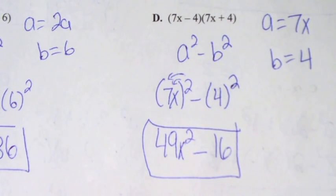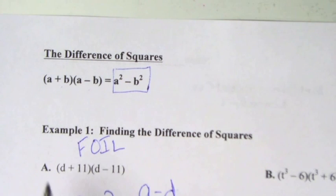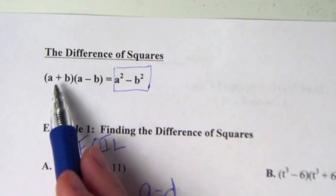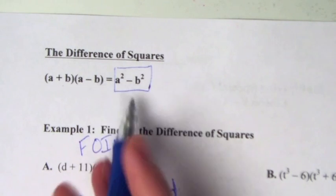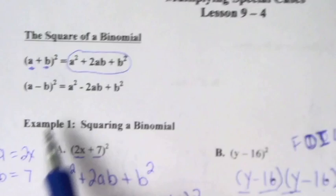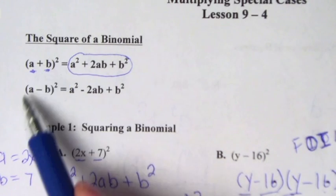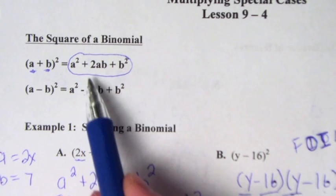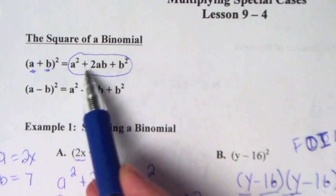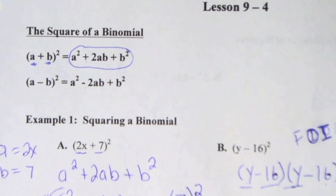Before I finish, notice the differences: for the difference of squares you have the same a and b but one is plus and one is minus. On the other side, squaring a binomial, you have (a + b) squared or (a - b) squared. The difference between those two formulas is just the first sign — if it's minus, it's minus there; if it's plus, it's plus there. And those are our shortcuts for these special cases.